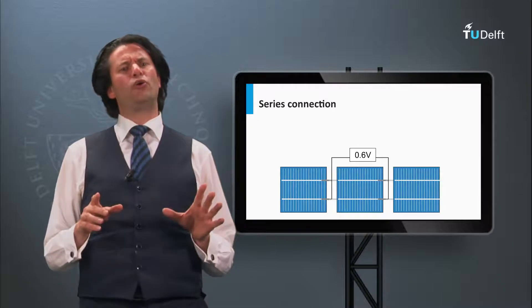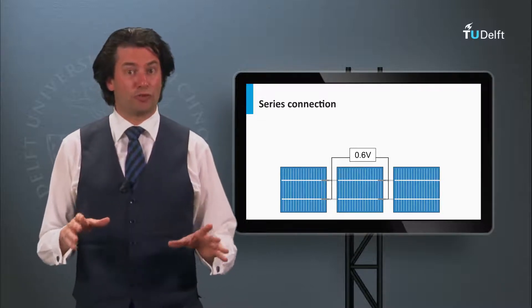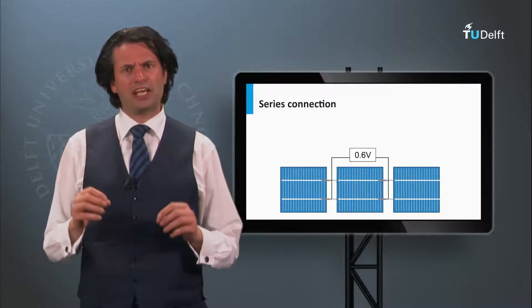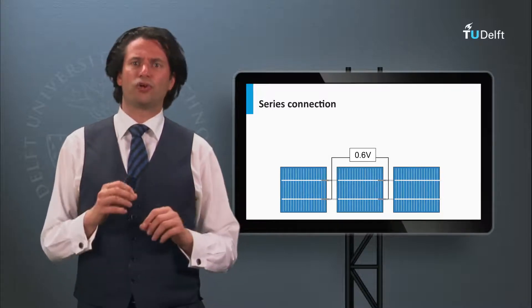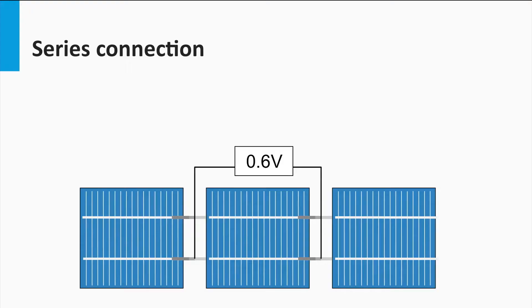Now we look at how we make a solar module out of an ensemble of solar cells. We can connect the solar cells in different ways. First, we have the series connection, as shown in this figure. In a series connection, the voltages add up.